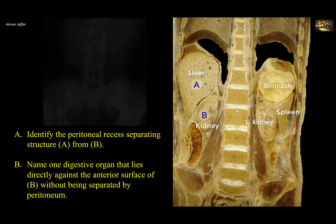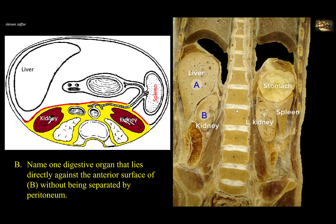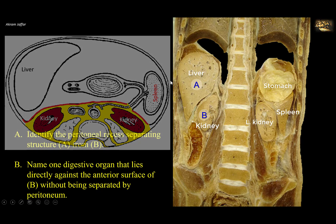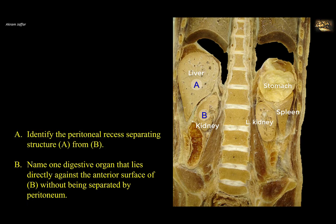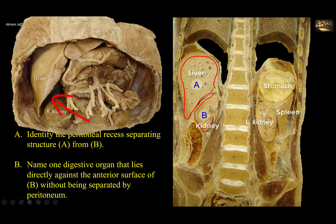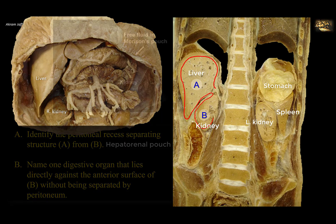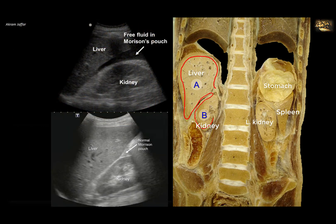Now, the kidney is a retroperitoneal structure — in fact, it is a primary retroperitoneal structure. Therefore, intraperitoneal structures such as the liver, which are almost completely covered by peritoneum, are separated from the kidney by a layer of peritoneum. The reflection of this layer forms a pouch, or a recess, or a pocket, and this is called the hepatorenal recess, or hepatorenal pouch, or Morrison's pouch. Excess intraperitoneal fluid or bleeding first accumulates in this pouch in the supine position.